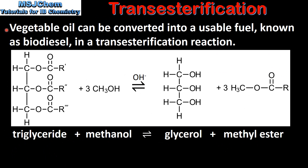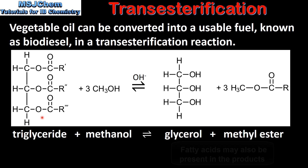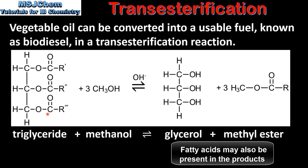Vegetable oil can be converted into a usable fuel, known as biodiesel, in a transesterification reaction. In a transesterification reaction the triglycerides in the vegetable oil react with alcohol — in this case methanol — in the presence of a strong base such as sodium hydroxide to form glycerol and methyl ester. The methyl ester is also known as biodiesel. In the reaction an excess of alcohol is used to drive the position of equilibrium to the right in favour of the products.